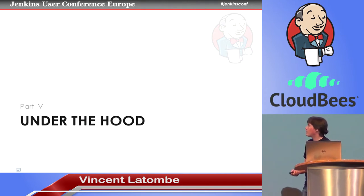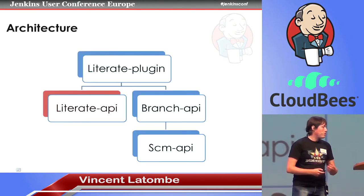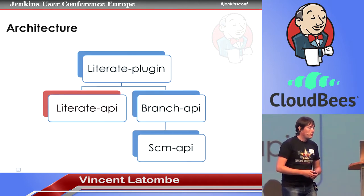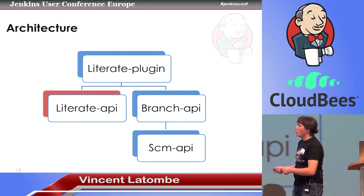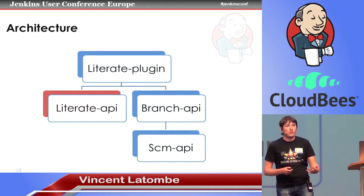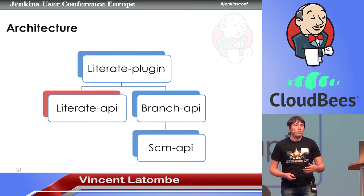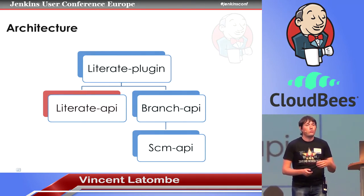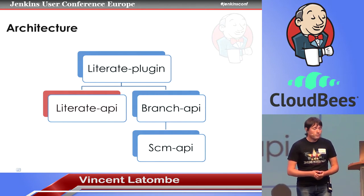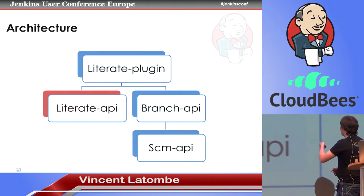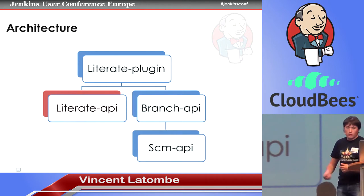Now the last part — a deeper look. The architecture of the plugin is split into different plugins. On top is the literate plugin you interact with when creating literate jobs. Behind it is an API that has no link to Jenkins — you could write a literate plugin for another CI engine or a command-line wrapper. There are two other foundational plugins: the SCM API and the Branch API. The literate API collects everything needed to parse a file and produce a project model. It has no tie to Jenkins, and there's already a command-line wrapper project that takes an environment and description file and gives you the corresponding build command.